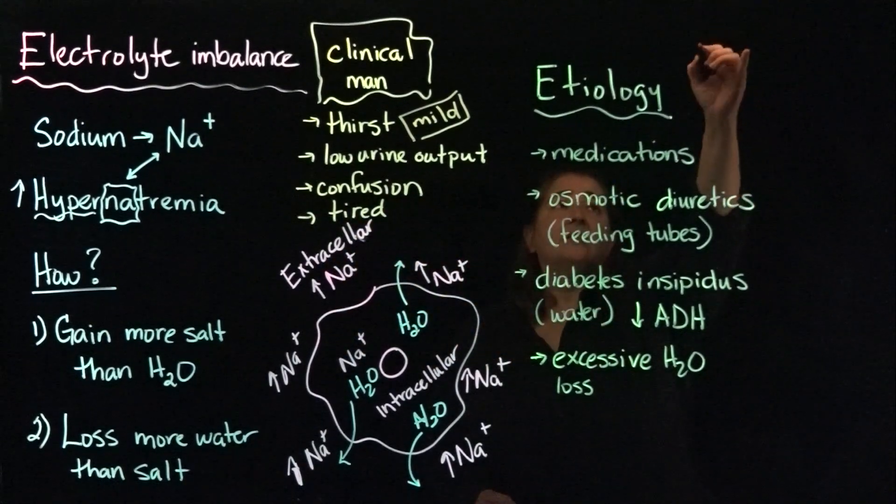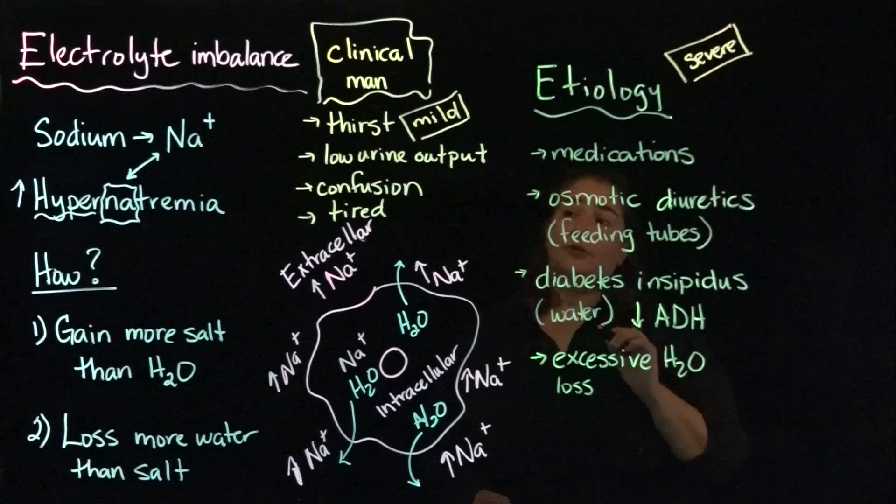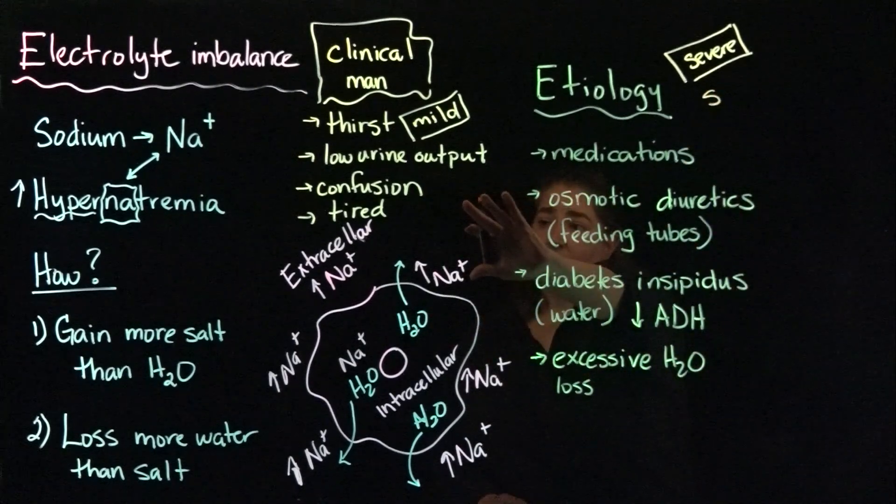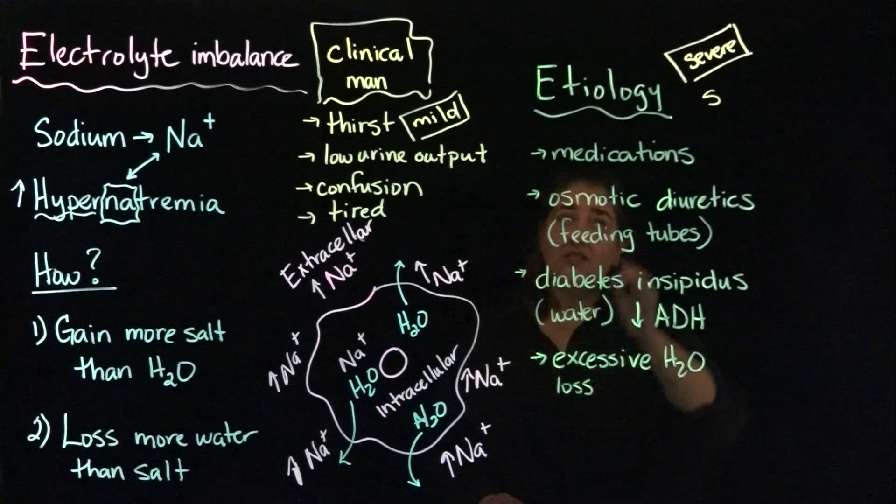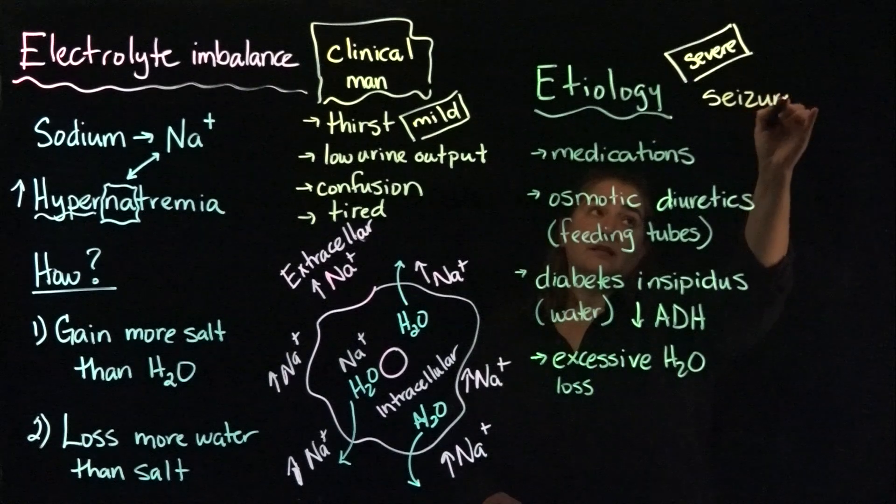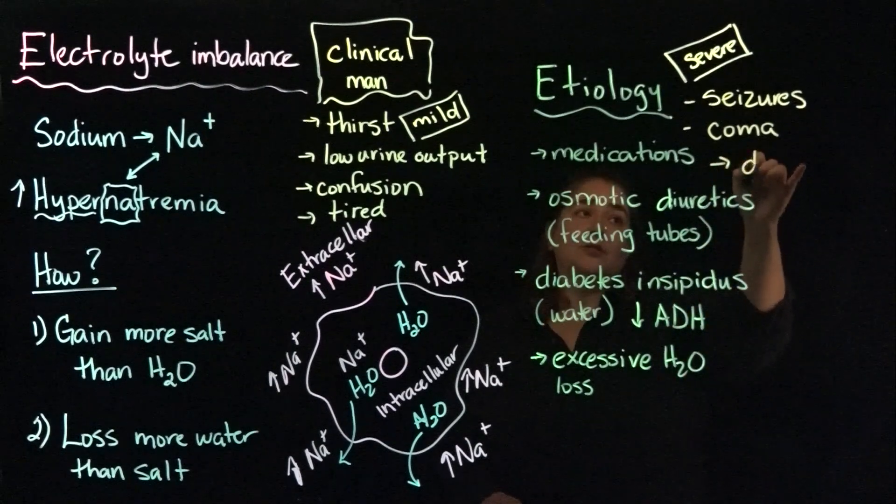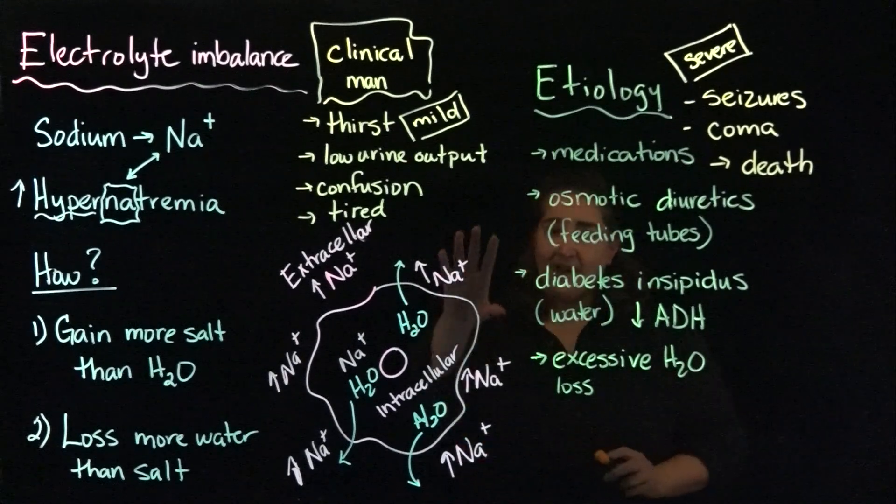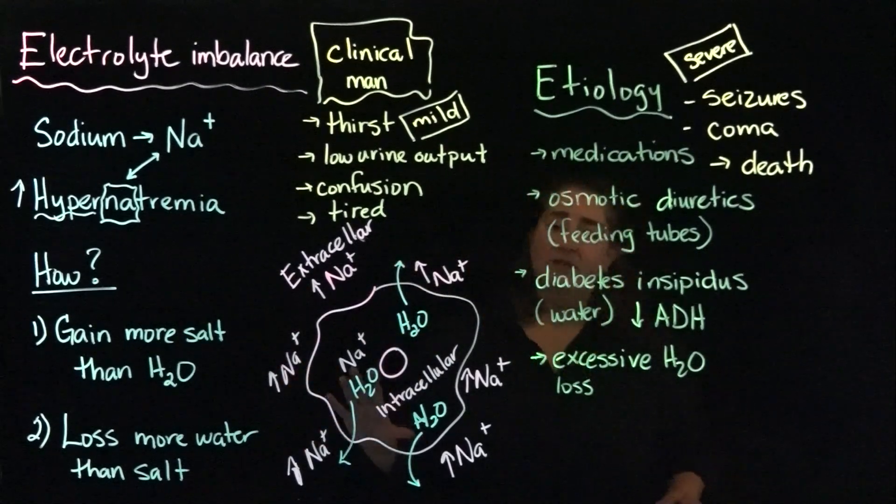And because this is where my board space is, I'm going to put severe clinical manifestations over here. Because of the water moving across the membrane and the imbalances in sodium, that can disrupt membrane potential. So that can lead to, in more severe cases, things like seizures, coma, and death. Not having correct fluid balance within the body can be very detrimental.